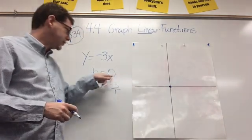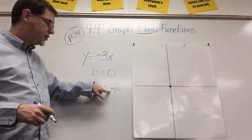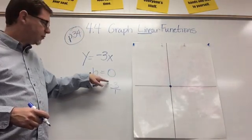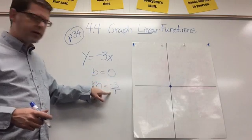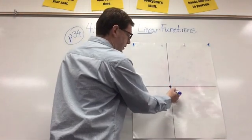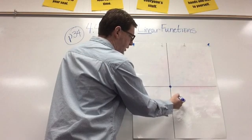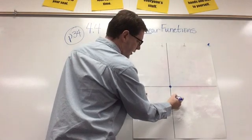And now, from that point, because B was 0, I'm going to do rise and run. Well, this tells me to rise negative 3 and run 1. So, I'm going to rise negative 3. It means I go down 1, 2, 3, and to the right, 1. And there's another point.